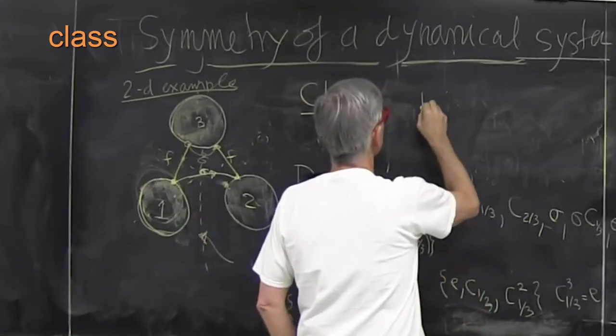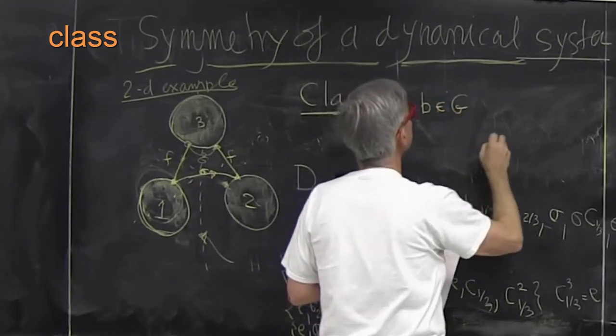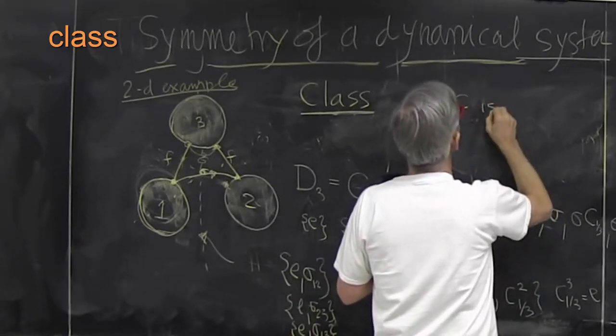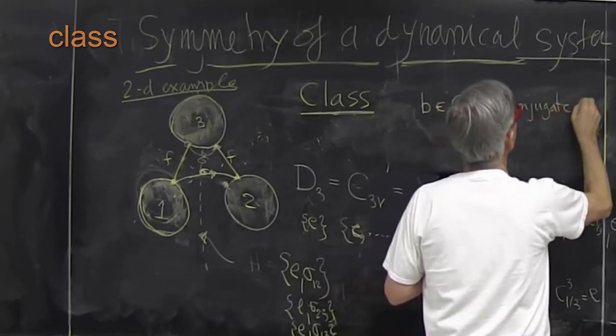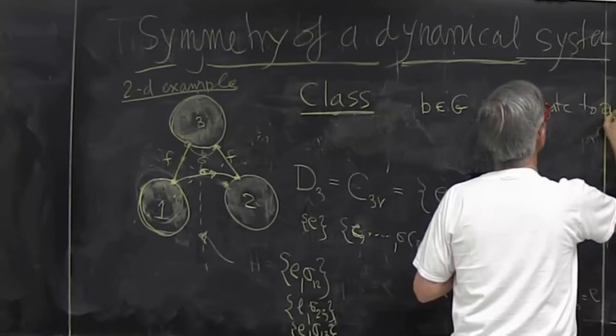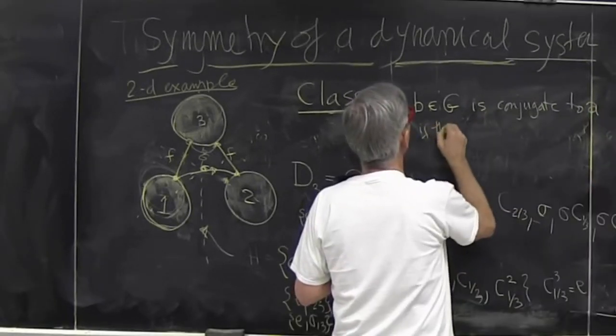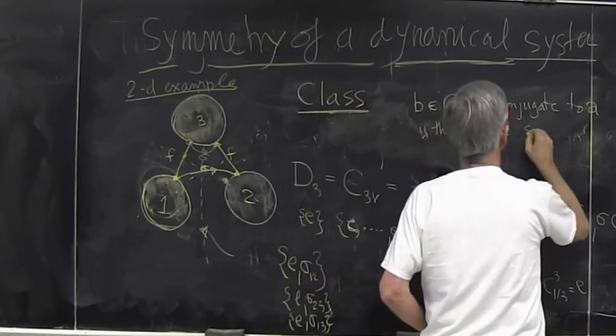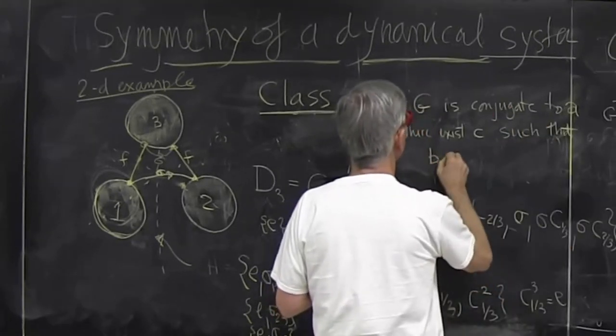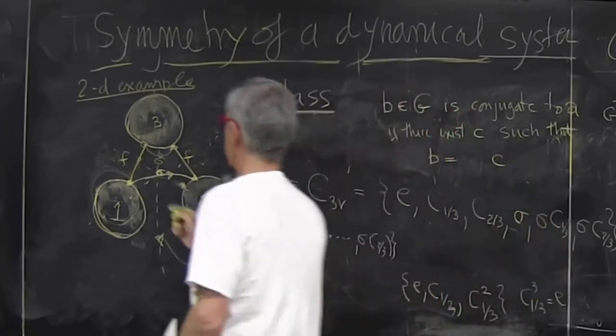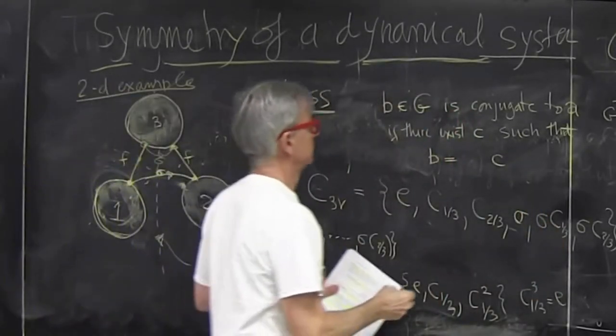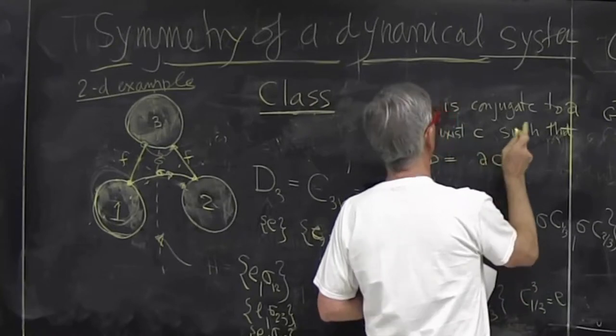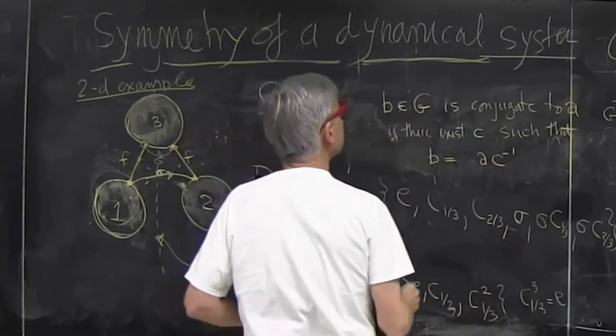It's the notion of class. The formal definition is that if B is in G, then the conjugate is conjugate to group element A if there exists element C such that I can write B as go from here to there. That is group element C inverse, just for convenience. Then I do my symmetry operation, flip this way, and I go back.